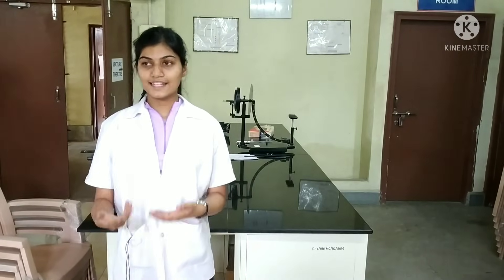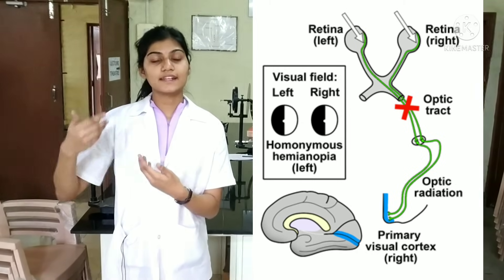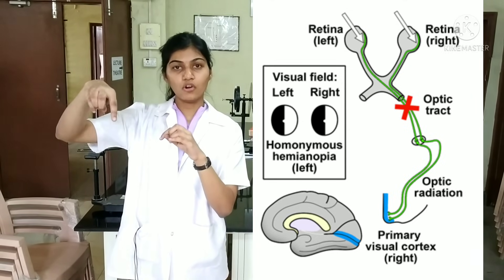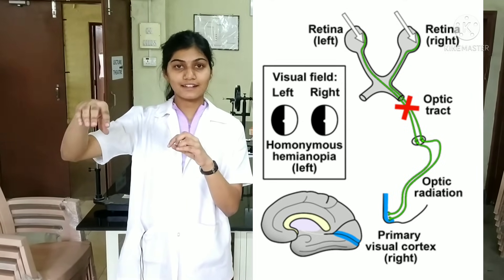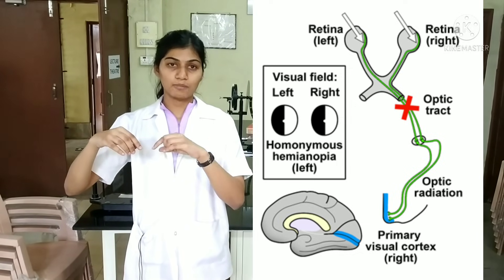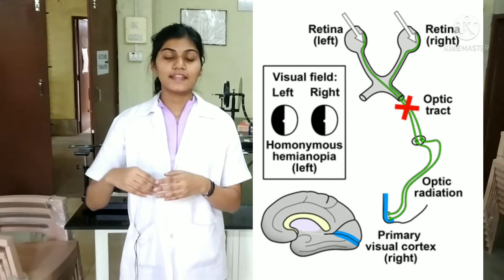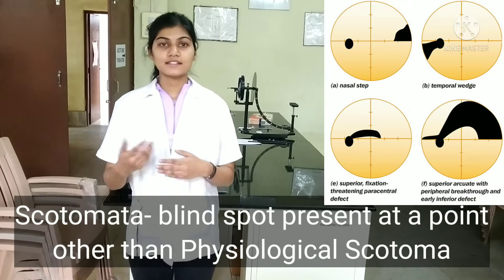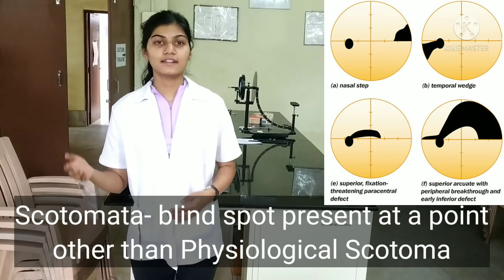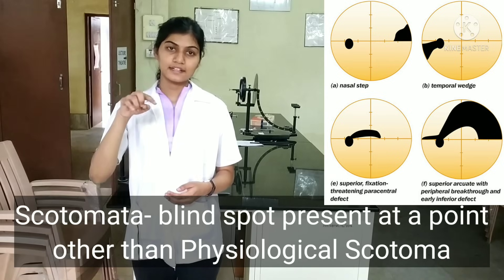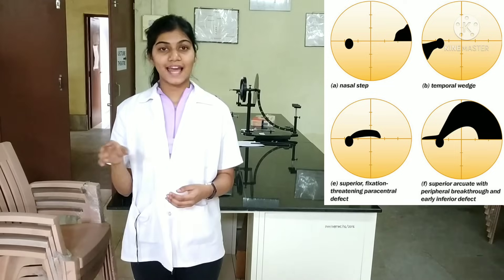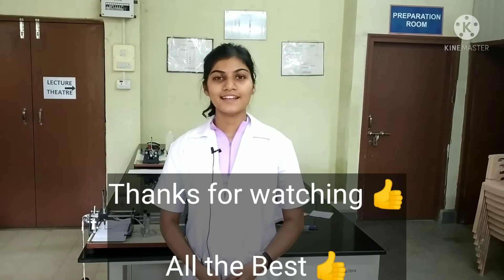If there is a lesion at the level of the optic tract, for example the right optic tract, the lateral fibers will not reach the right eyeball and the medial fibers will not be able to cross to the left eyeball, resulting in homonymous hemianopia. The third clinical point is scotoma — if the blind spot is present at a point other than the physiological scotoma, that is other than where the optic nerve leaves at the level of the optic disc, it is known as scotoma, which is seen in glaucoma. Thank you for watching — hope it helped and all the best for your exams.